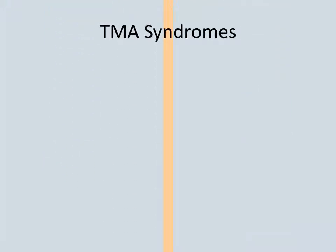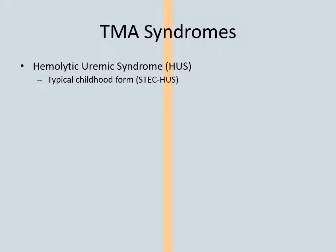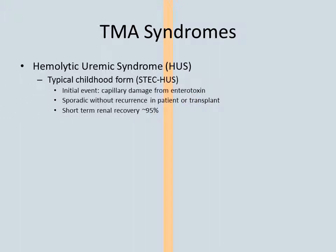Three major forms of TMA occur. The most common childhood form is hemolytic uremic syndrome, most often triggered by a gastroenteritis with a shigatoxin-producing organism — we'll refer to this as STEC-HUS. Toxin absorbed from the gut damages capillaries, triggering other events. This form generally has a very good short-term prognosis.